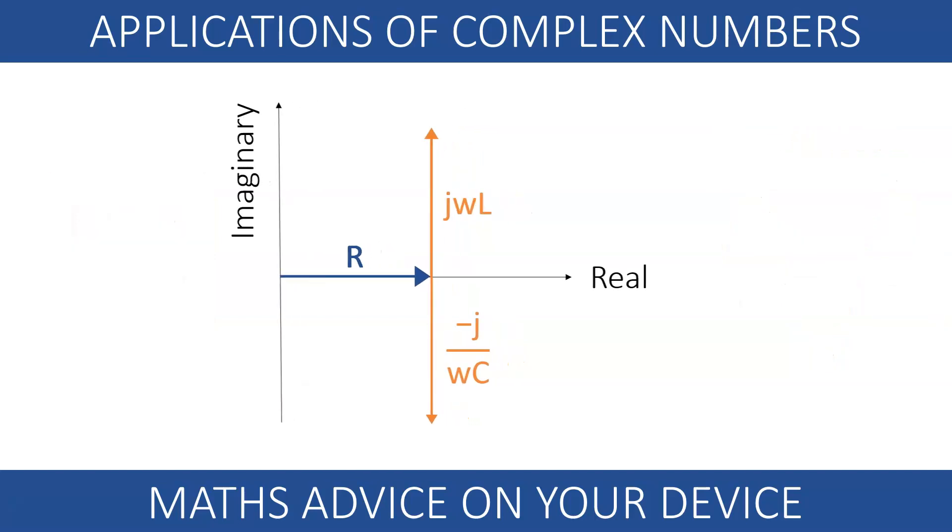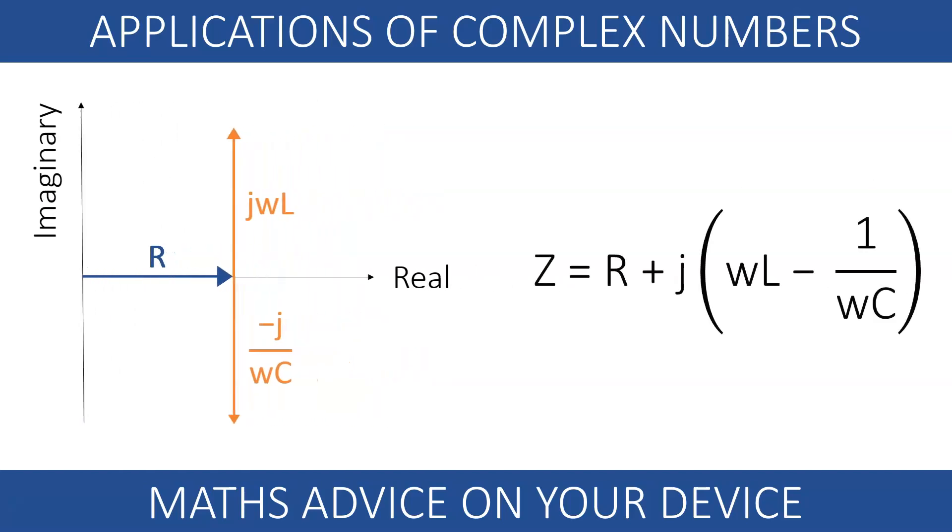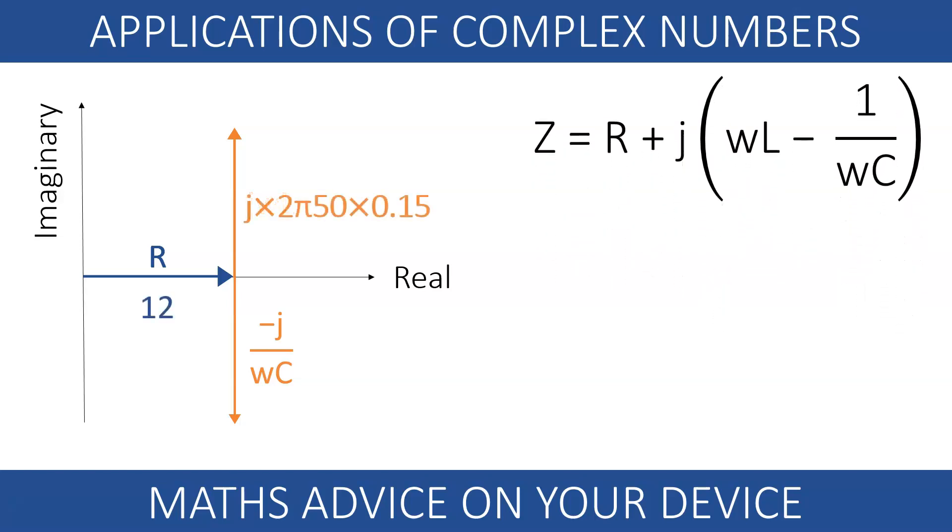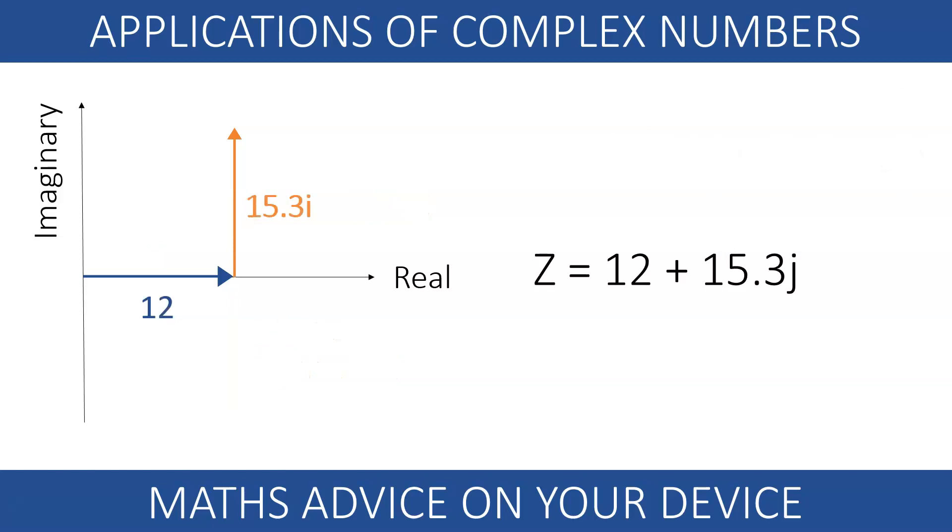This can be represented in the Cartesian form using the complex impedance. For example, if we connect a 50 Hz motor across the resistance of 12 ohms, an inductance of 0.15 Henry and a capacitor of 100 µF, the impedance of the circuit can be written as the complex number 12 plus 15.3j.